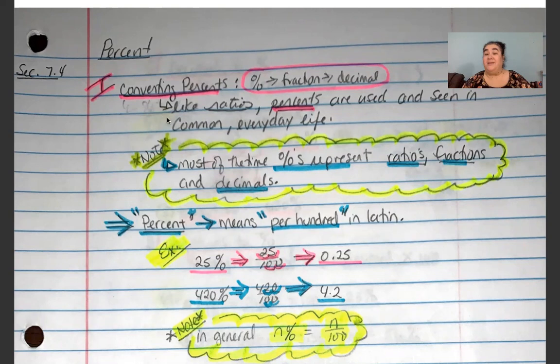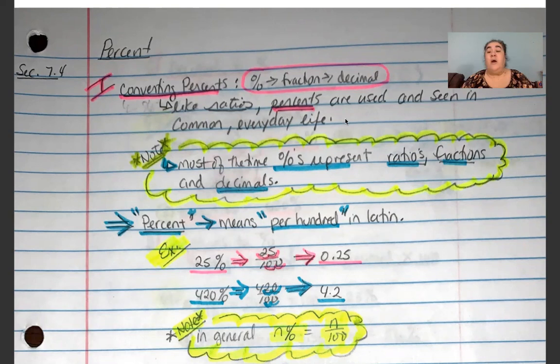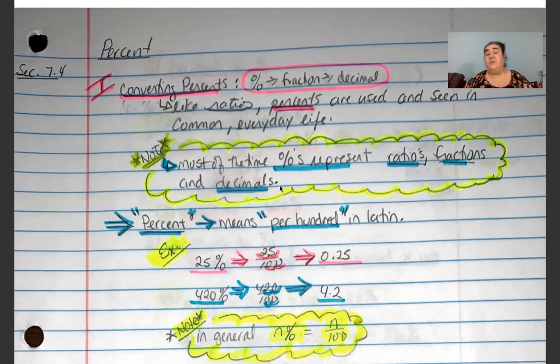Why are we talking about percents? Like ratios, percents are used and seen in common everyday life. If you want to know how much tax you're going to pay on something you're purchasing, you need to know about percents. If you want to know how much tip to leave at the end of a meal, you need to know about percents. If you want to know how much money you're getting in your raise, you need to understand percents. Information is constantly given to us as consumers in percentages, so it's important to know how to work with them.